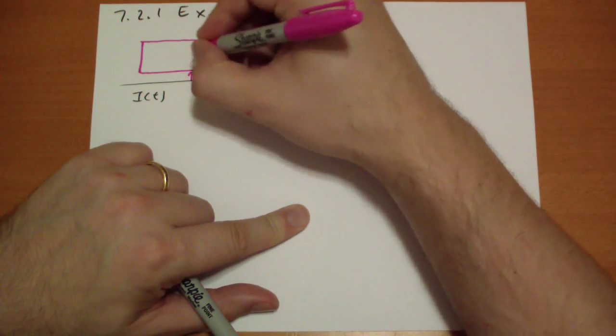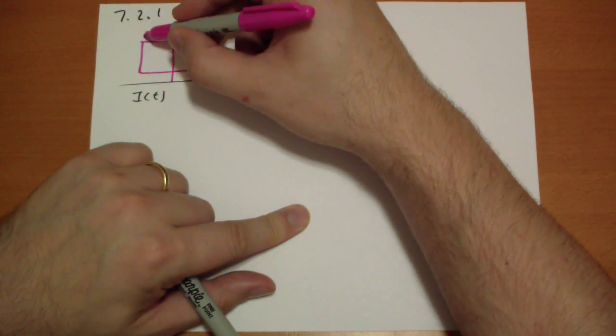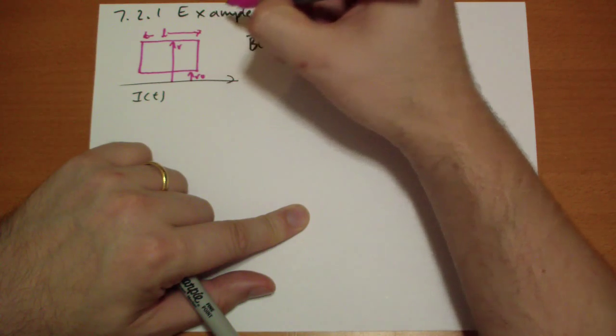So we have a distance here of r naught, we have a distance here of r, we have a length l.